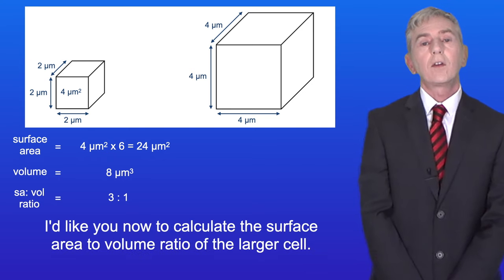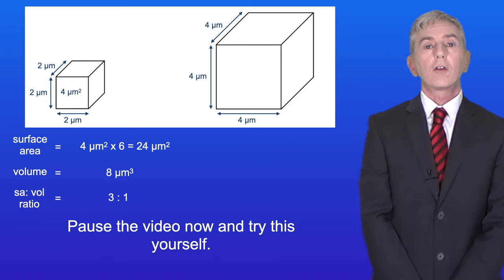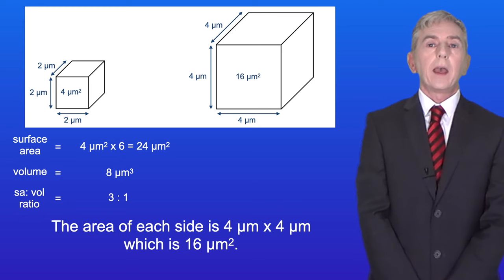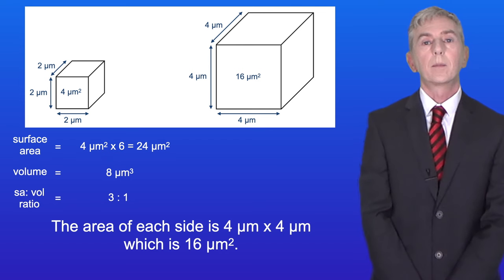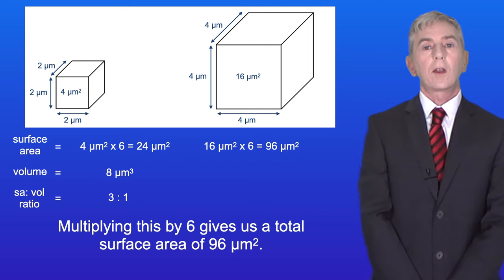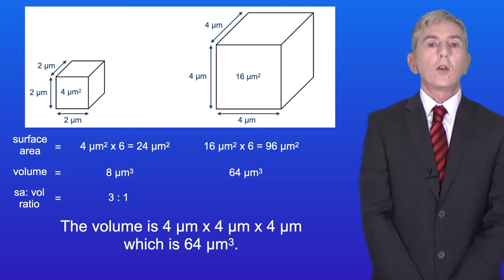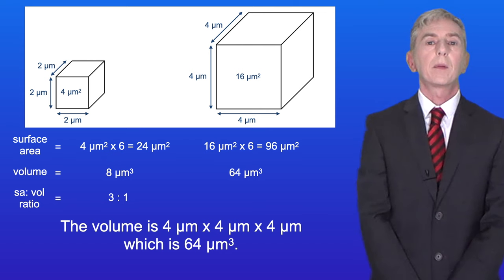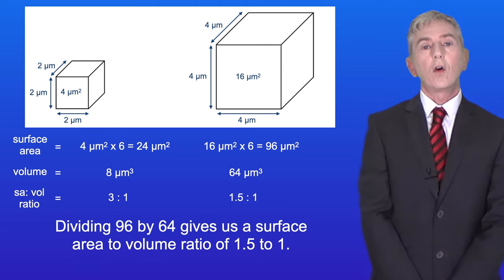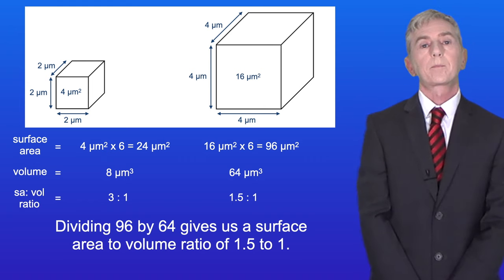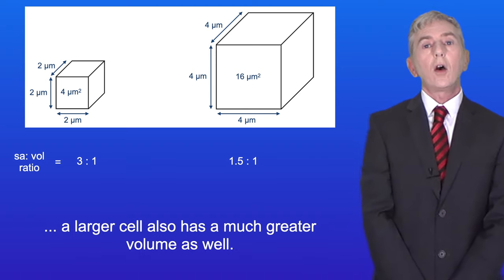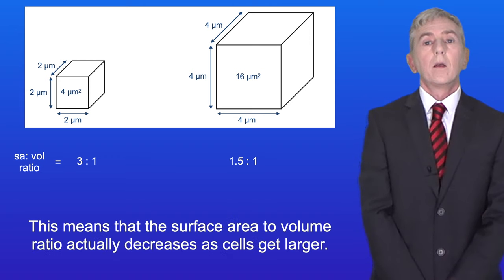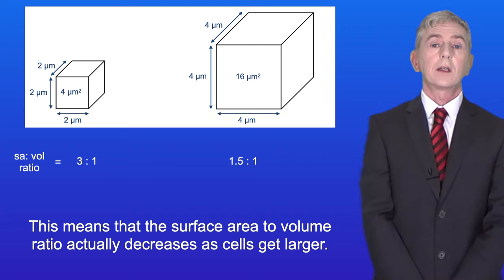Now calculate the surface area to volume ratio of the larger cell, which has sides of 4 micrometers. The area of each side is 4 × 4 = 16 micrometers squared; multiplied by 6 gives a total surface area of 96 micrometers squared. The volume is 4 × 4 × 4 = 64 micrometers cubed. Dividing 96 by 64 gives a ratio of 1.5 to 1. So although a larger cell has a greater surface area, its much greater volume means the surface area to volume ratio decreases as cells get larger.